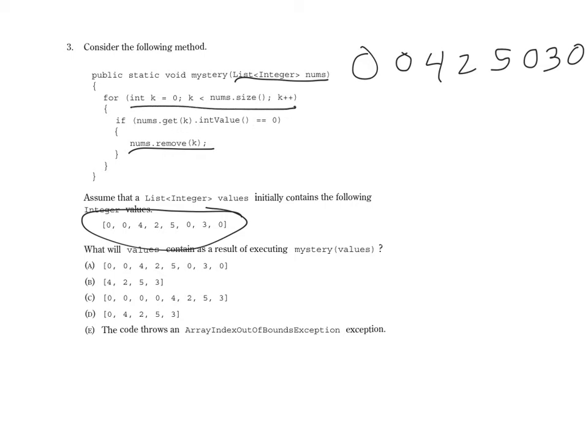And then it says here, let's figure out what happens within our for loop. It looks like if we ever find an element that is a zero, we are going to remove that element. Okay, so let's go ahead and get started. The first thing we know is that the first element is a zero, so we are going to have a remove.